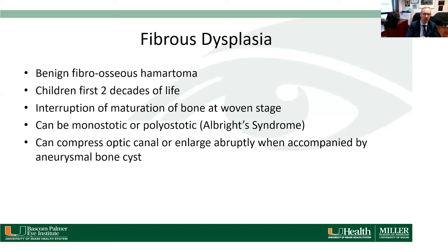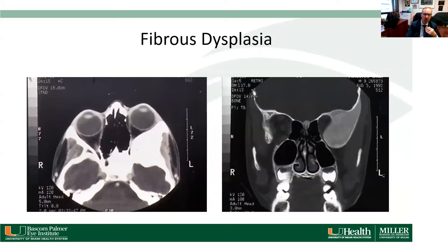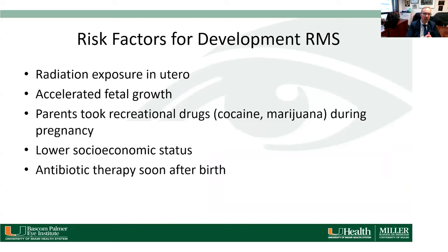The classic histopathology shows multiple eosinophils and histiocytes comprising the eosinophil granuloma. Fibrous dysplasia is another tumor that can be mistaken for rhabdomyosarcoma — it's a benign fibro-osseous lesion usually occurring in the first two decades of life, thought to be due to interruption of bone maturation at the woven stage. It can be monostotic or polyostotic with multiple lesions in Albright syndrome. This young boy had slow painless proptosis, and CT showed a large bony mass with a ground-glass appearance characteristic of fibrous dysplasia.